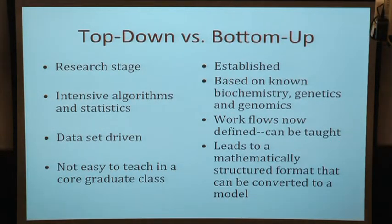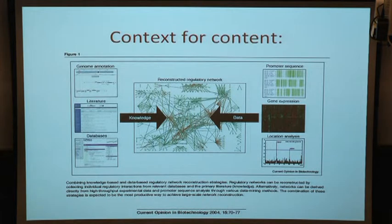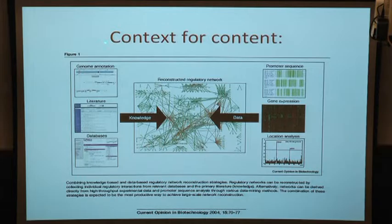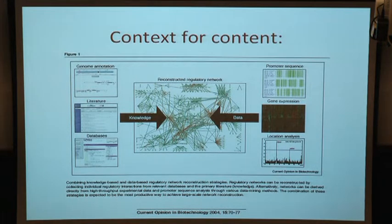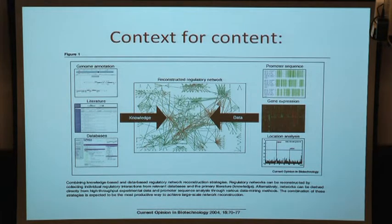One of the really useful aspects of these kind of reconstructions is to provide context for content. You can take your genome annotation, literature, databases, promoter sequences, gene expression, location analysis, and so forth, and it all maps onto that network. Networks are really central in terms of understanding how all these seemingly disparate pieces of information come together, and it forces you to reconcile aspects of what you think you know that are in conflict with each other.